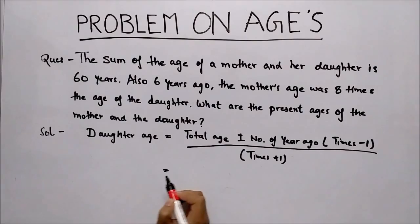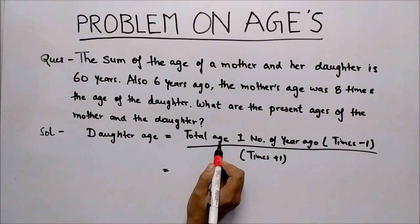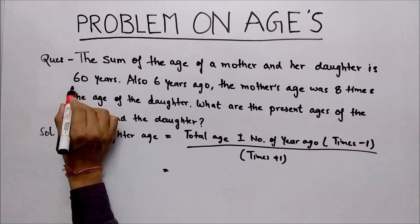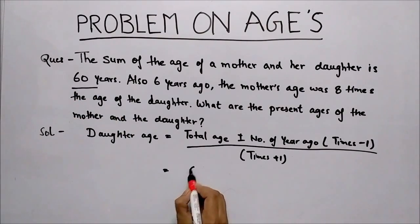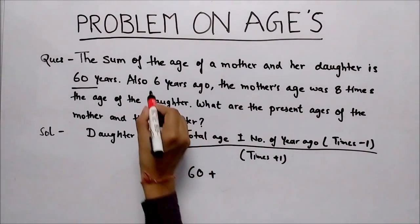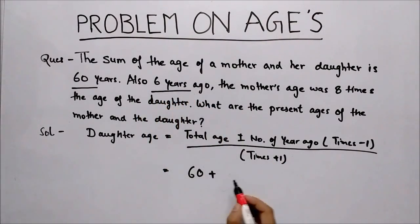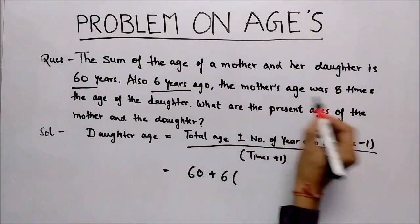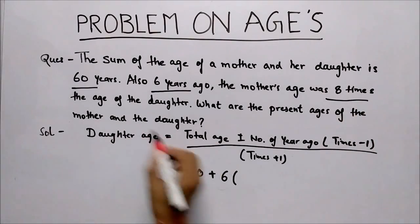Now put the values in the formula. Total age here is 60 years, plus number of years ago. The number of years ago is 6 years ago, put the value of 6 here. The times - now find the mother's age was 8 times the age of the daughter.